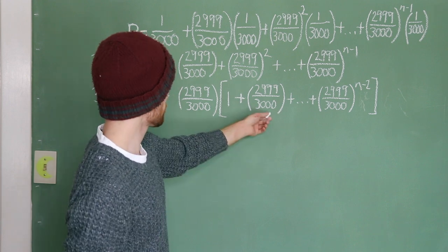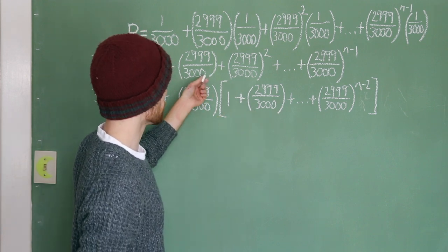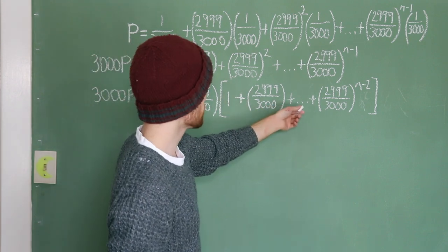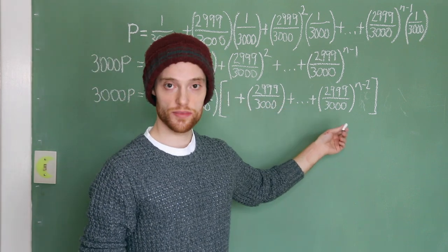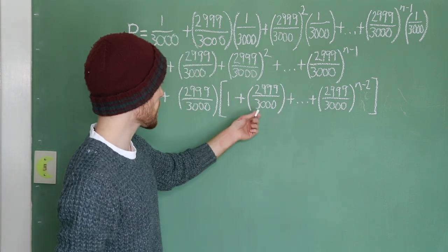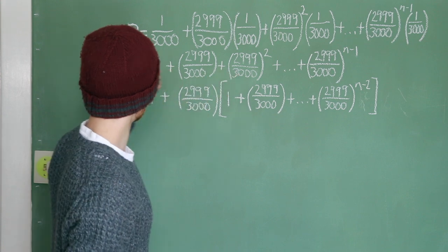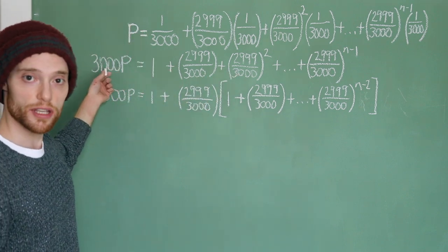1, 1, 2,999 over 3,000, 2,999 over 3,000, the rest of the series. They end on different terms, but we can deal with that pretty easily. So, let's substitute into these brackets what this series, also this series, is equal to 3,000p.